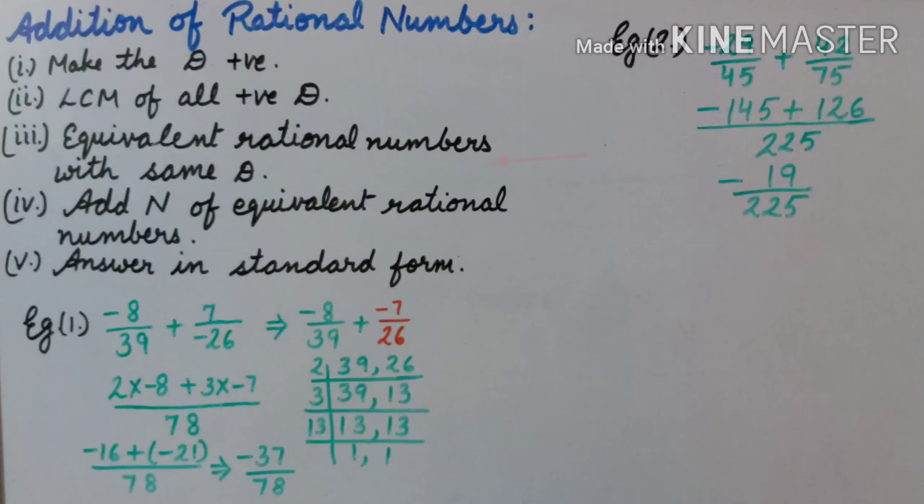Convert each rational number into equivalent rational numbers with the same denominator and add the numerators of these rational numbers. At last, we will reduce the numerator and denominator if they are reducible, as the answer should be in standard form.